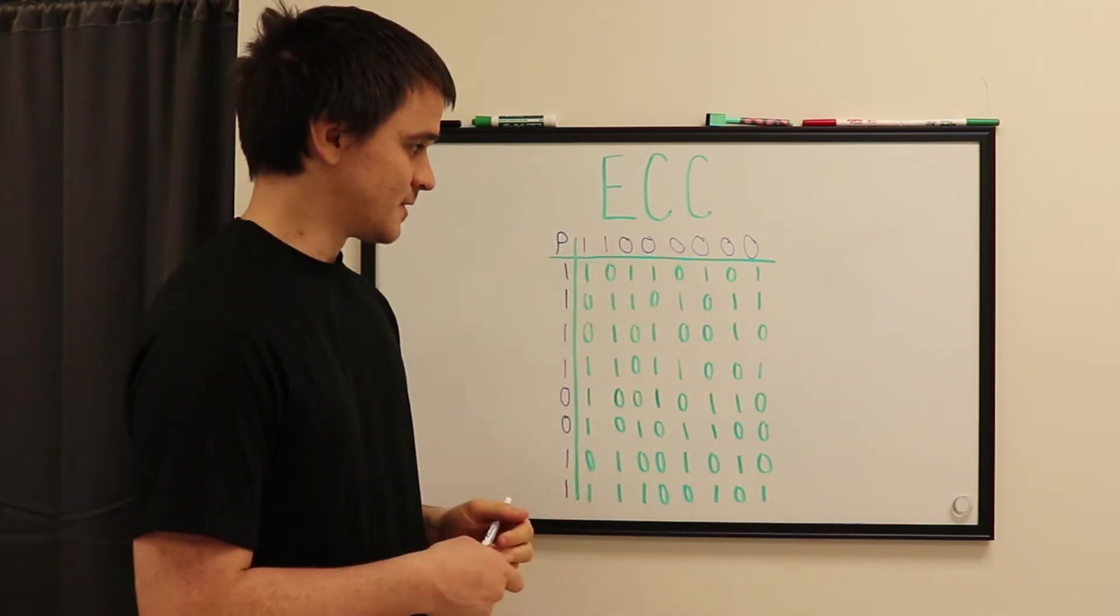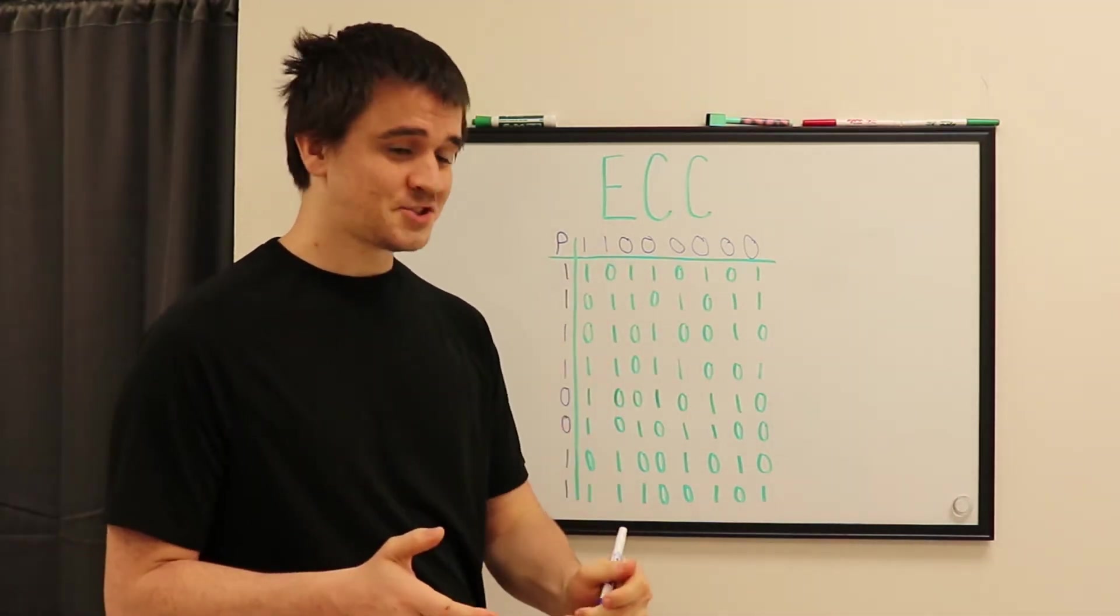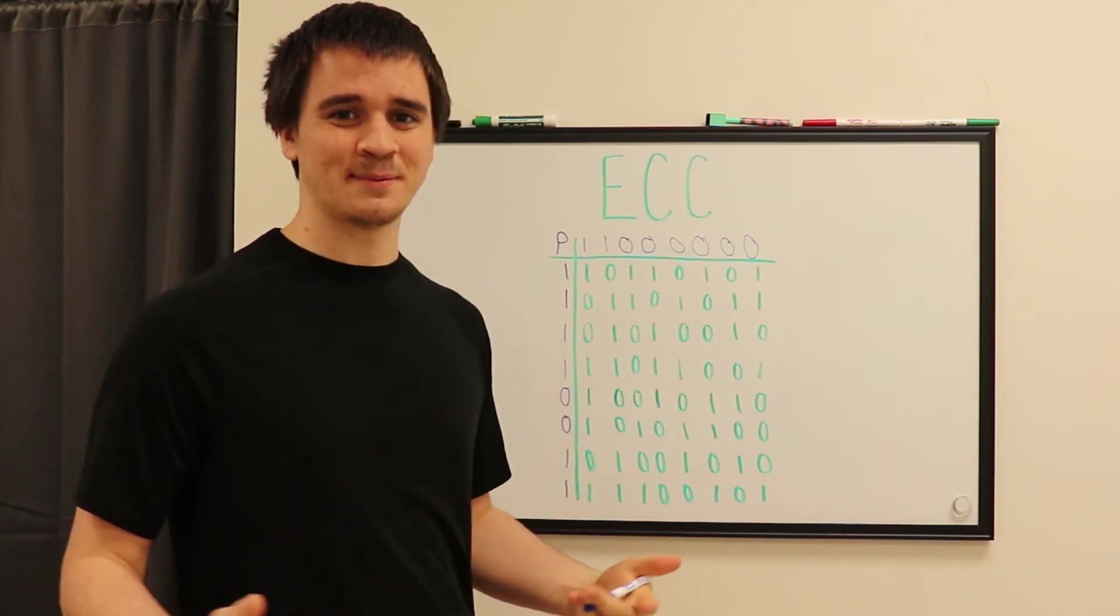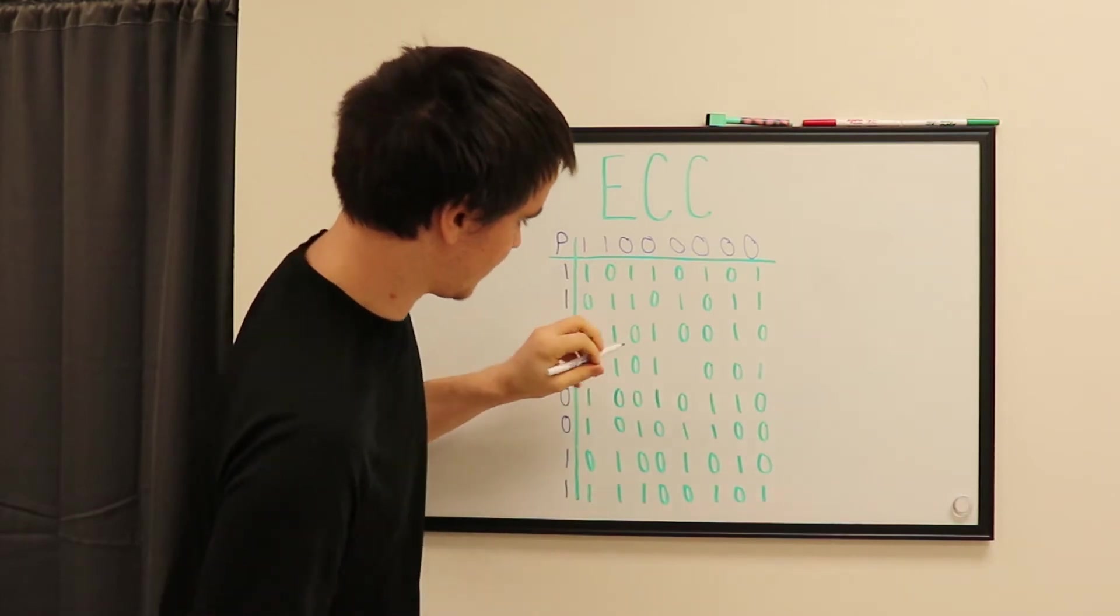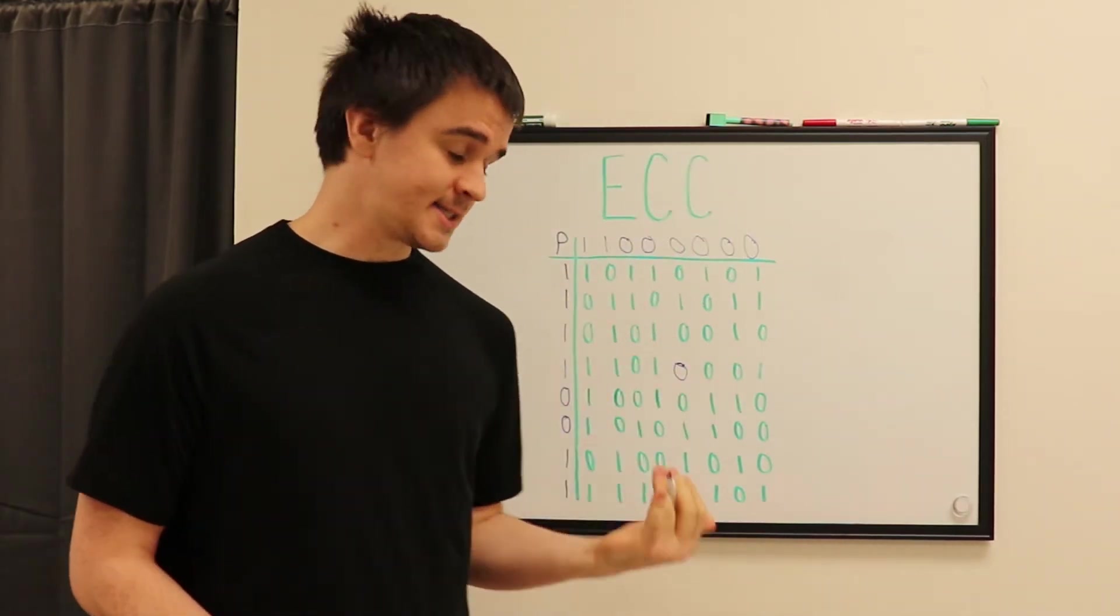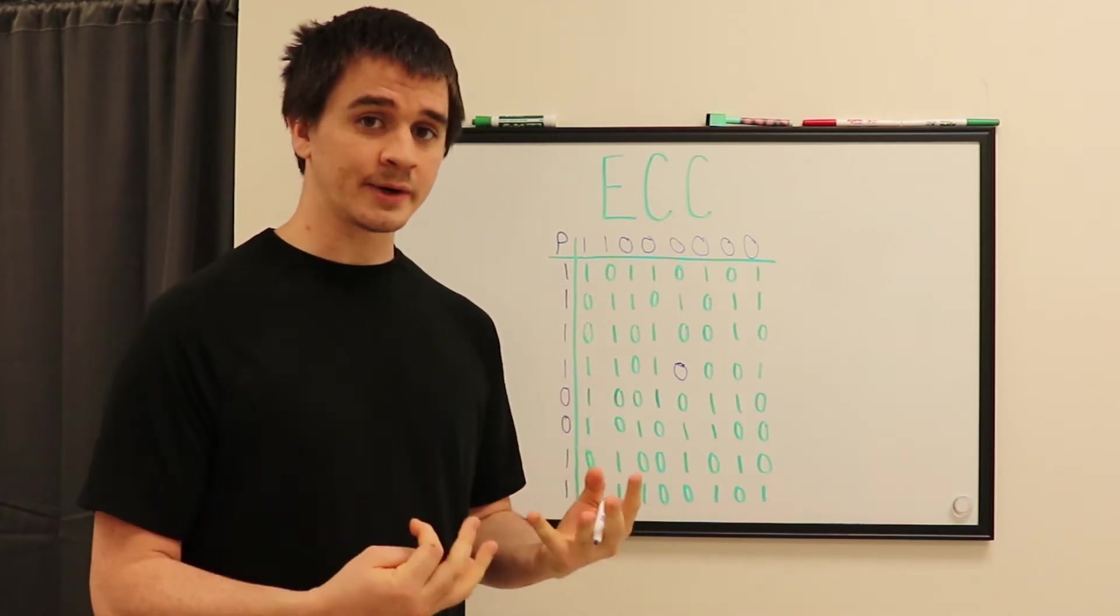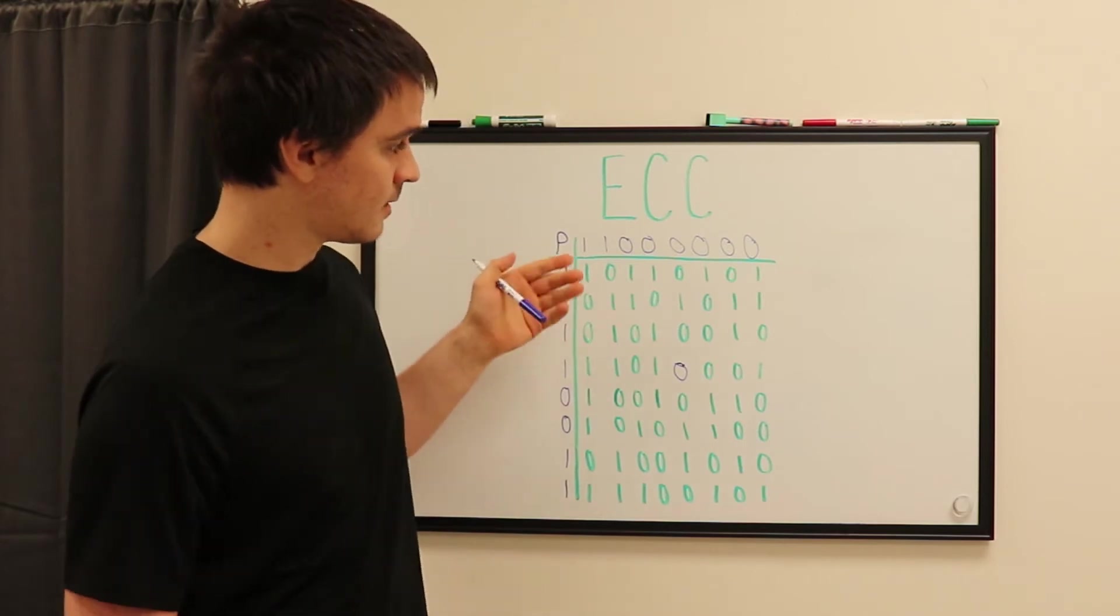Now that we have the parity for the top row and parity for this row, let's change some bits because that's what happens in real life. I'm going to take this one and we're going to make it a zero.